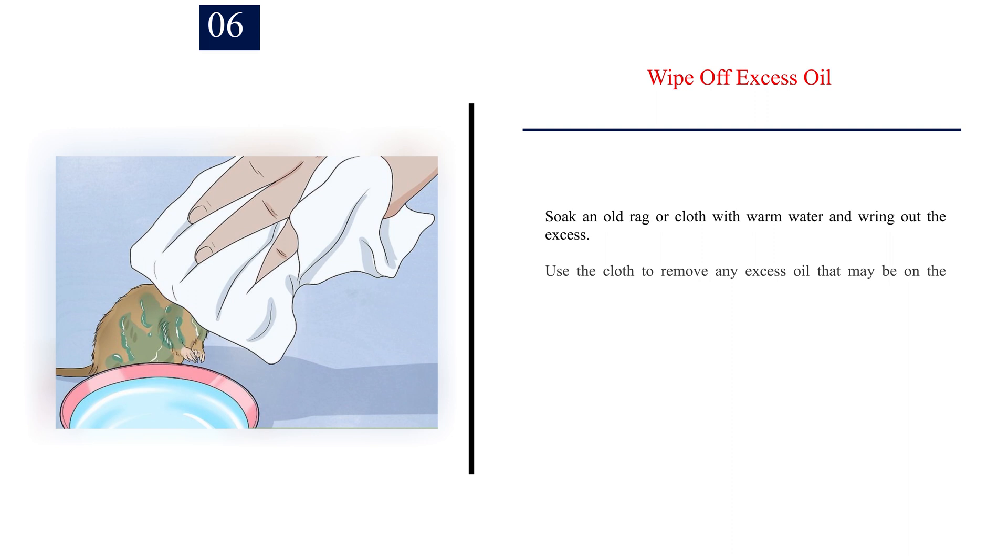Number 6: Wipe off excess oil. Soak an old rag or cloth with warm water and wring out the excess. Use the cloth to remove any excess oil that may be on the mouse's paws, head, or body. Oil will prevent the mouse from regulating its body temperature, so it's important to remove as much as possible.